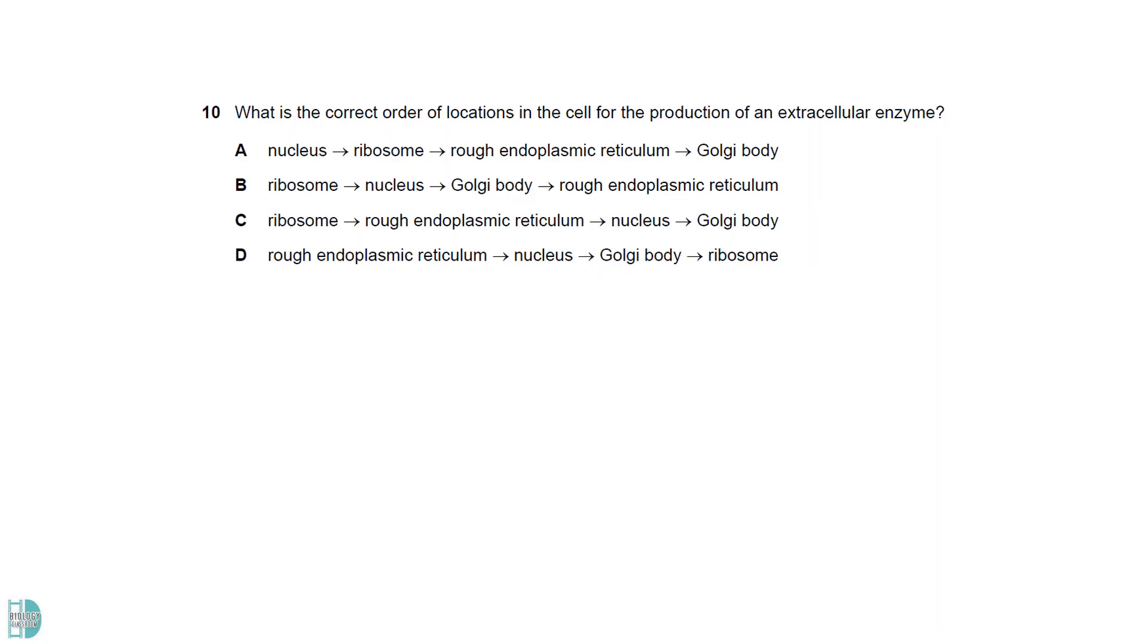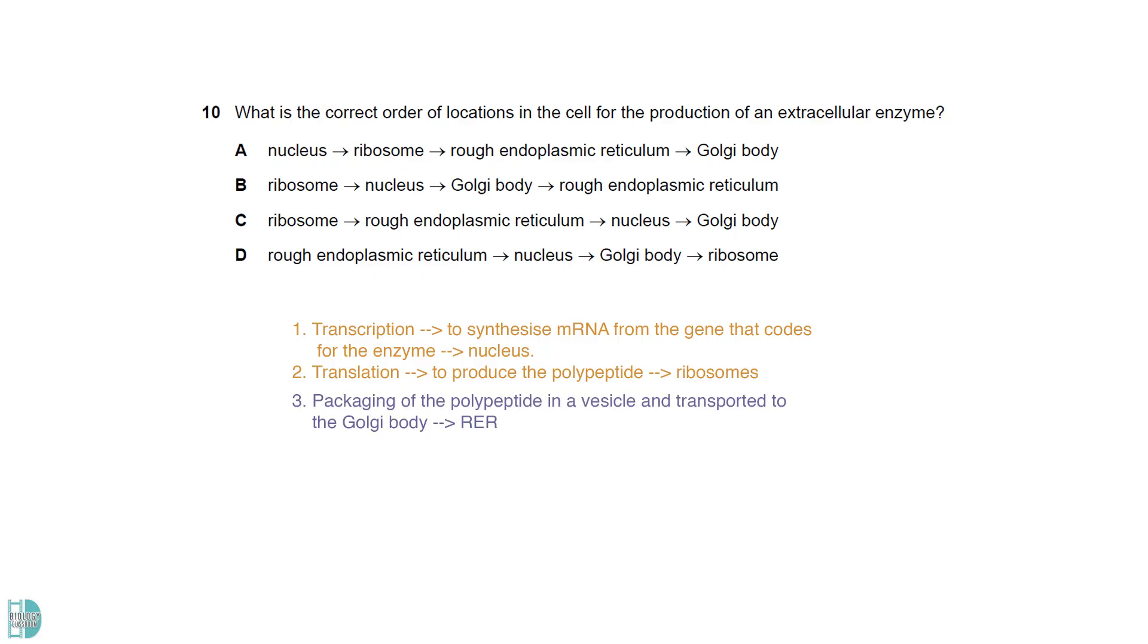First, transcription is needed to synthesize mRNA from the gene that codes for the enzyme. It occurs in the nucleus. Then, translation at ribosomes takes place to produce the polypeptide. Rough ER will package the polypeptide in a vesicle and transport it to the Golgi body. It is modified and packaged into a secretory vesicle before being released from the cell via exocytosis.